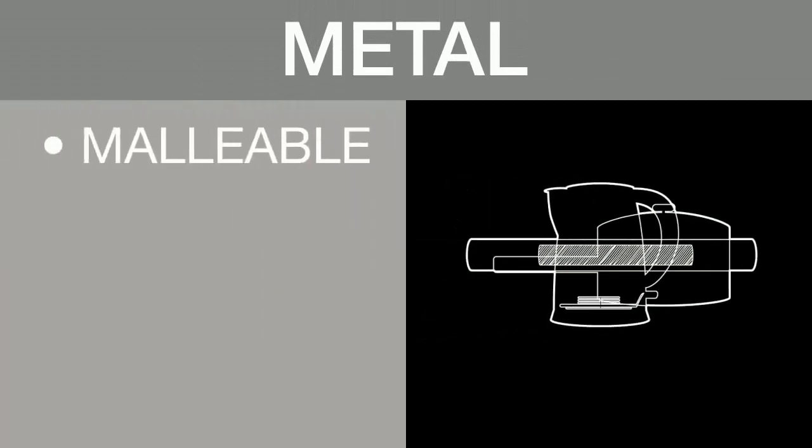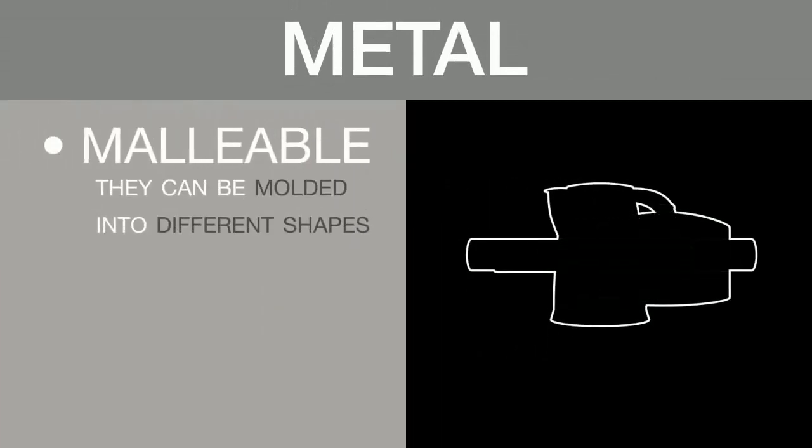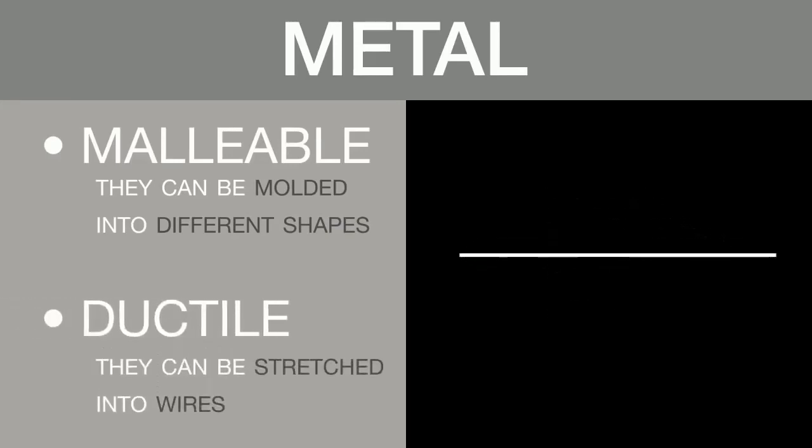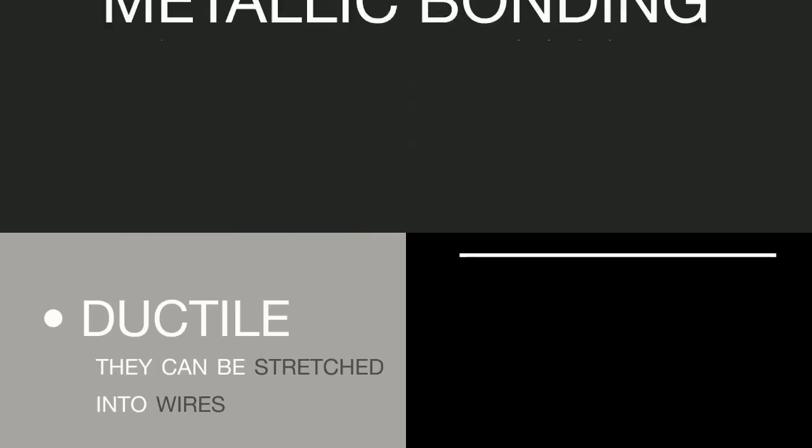Metals are malleable, meaning they can be molded into different shapes. Metals are very ductile, meaning they can be stretched into wires. To fully understand these properties of metals, we must understand metallic bonding.